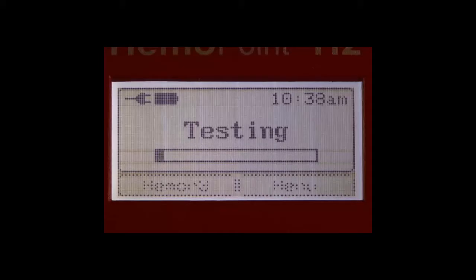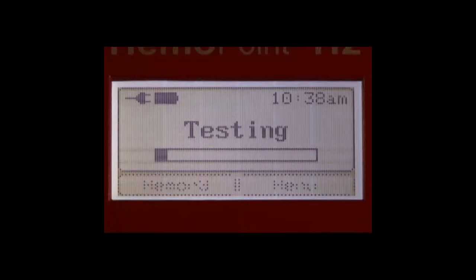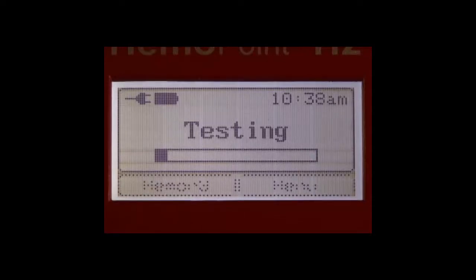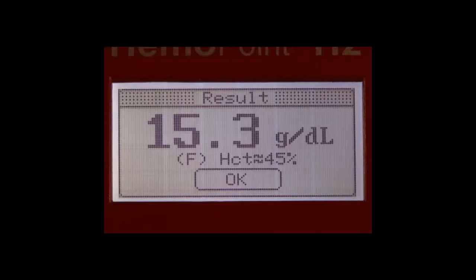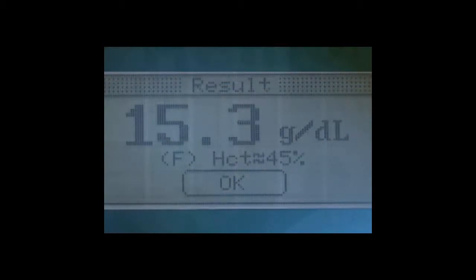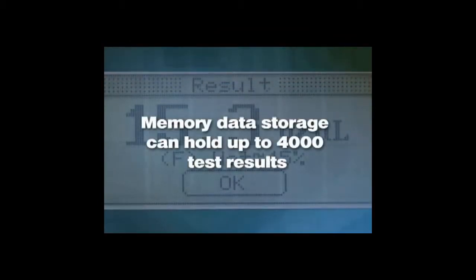After insertion, testing of the micro-cuvette begins automatically. The testing time varies according to the hemoglobin concentration and can take between 10 seconds and three minutes to complete. When completed, you can then make note of the test results. Pressing the OK button is not absolutely necessary. It merely produces a confirmation of the result, while the photometer changes to the ready mode display. The measured result is stored and can be recalled later from the memory data storage, which can hold up to 4,000 test results.